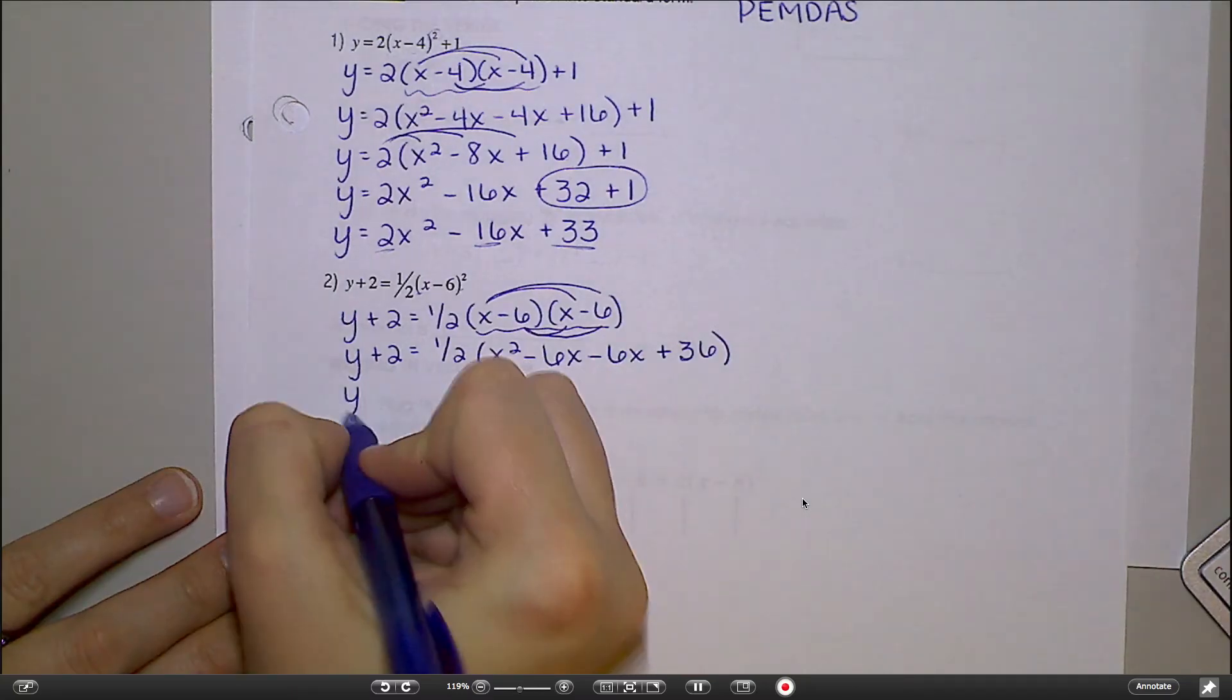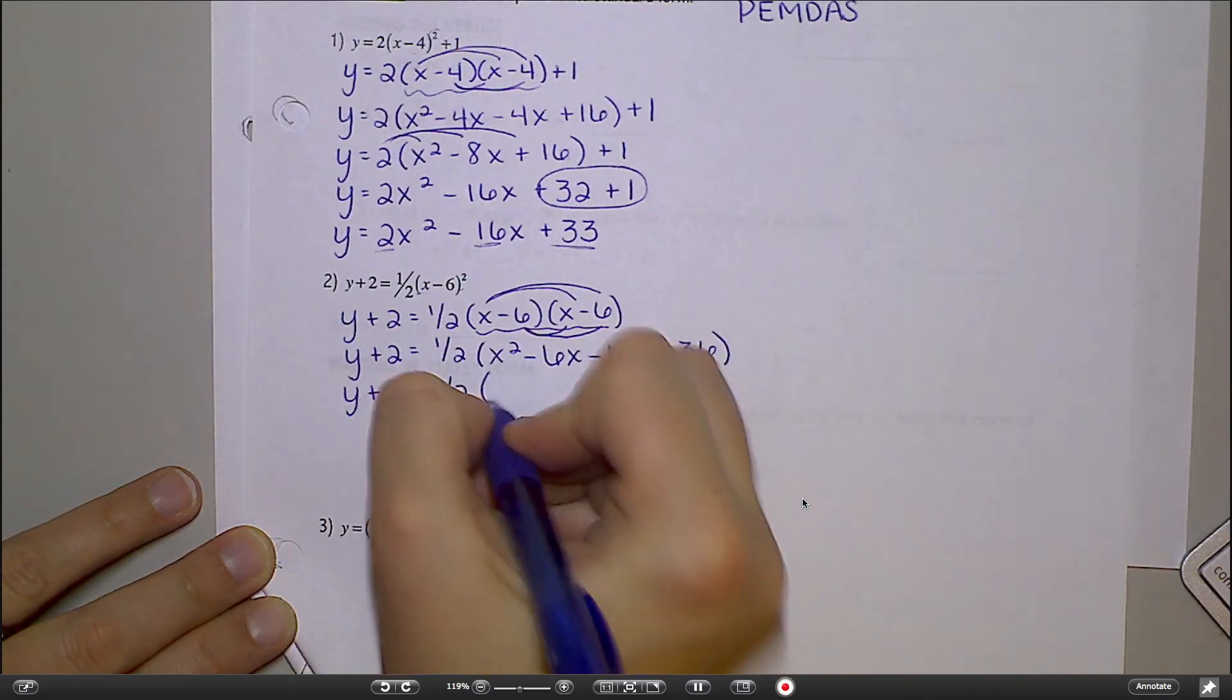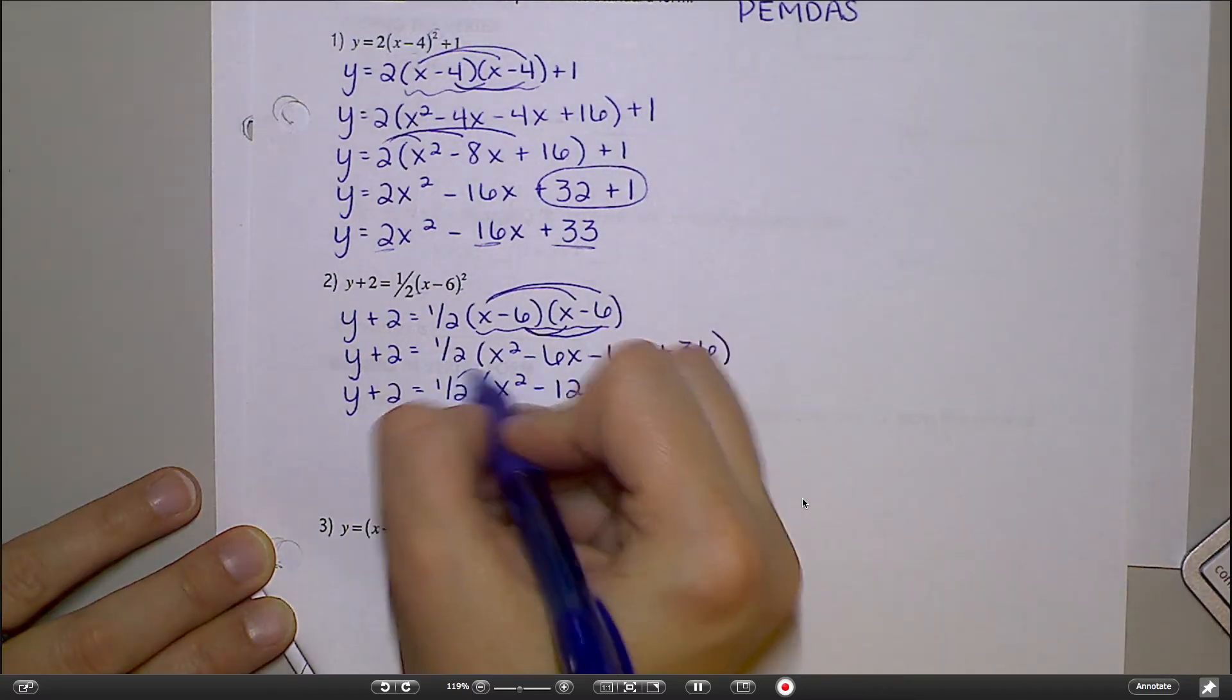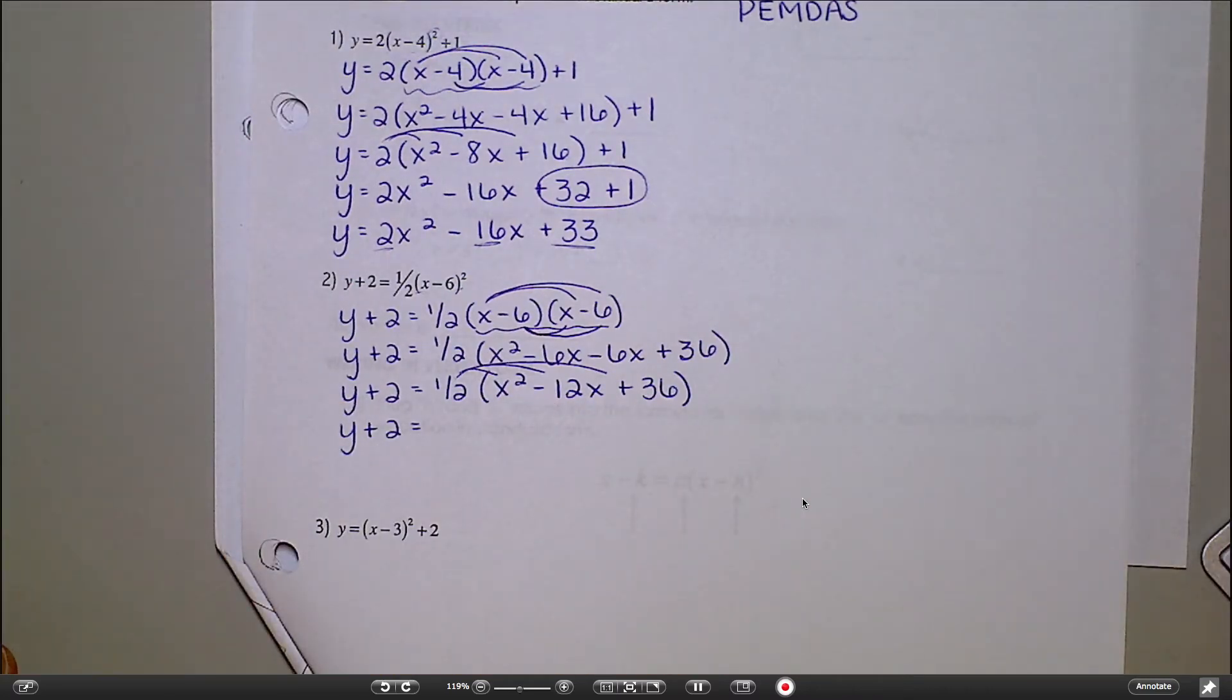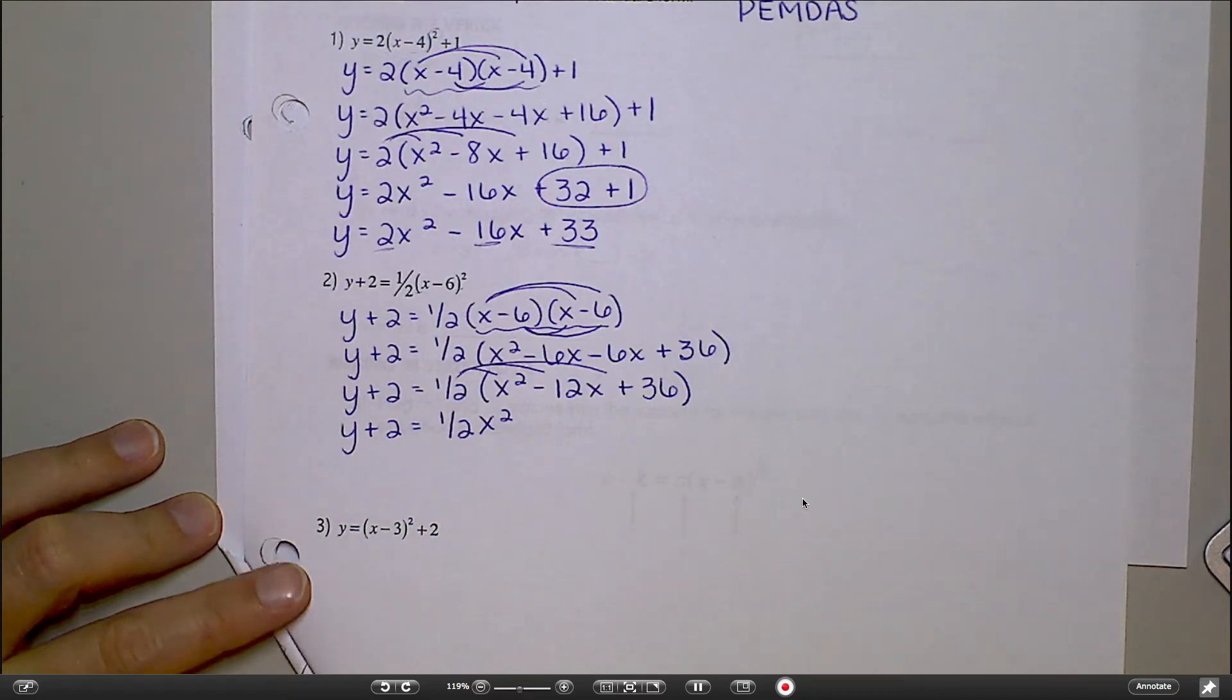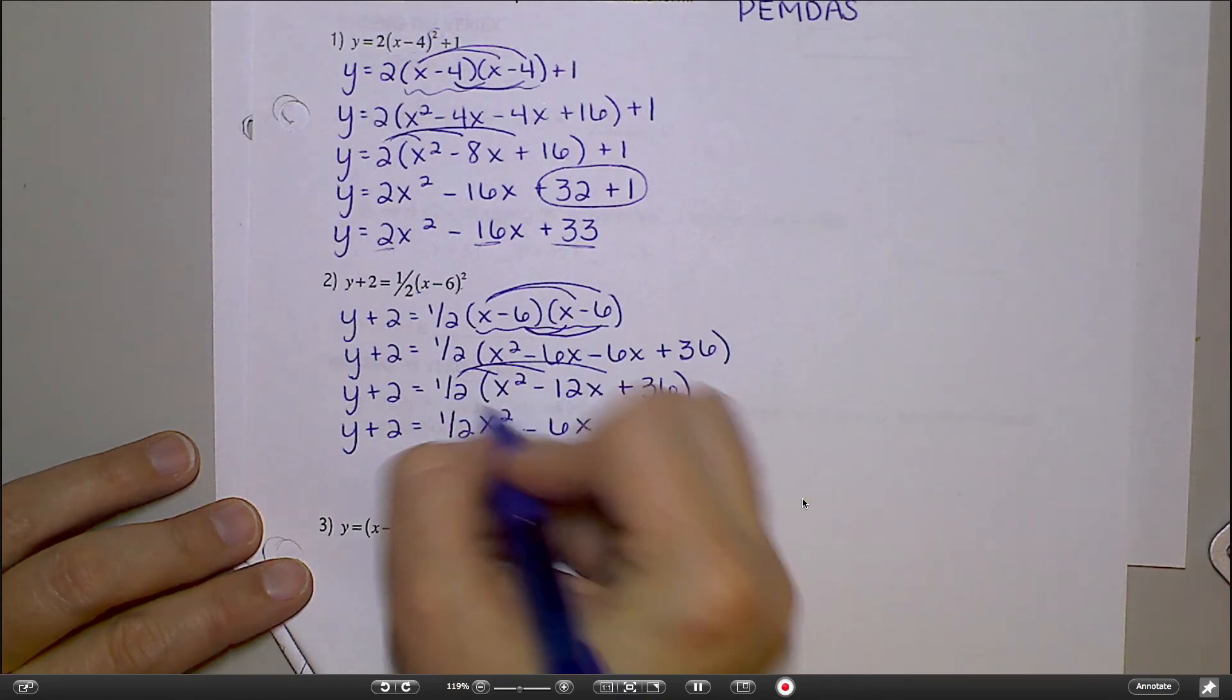Okay. So now y plus 2 equals 1 half. Let's combine my 6x's. Distribute the 1 half. What's 1 half times x squared? Oh, 1 half squared. 1 half x squared, yeah. I have a lot of people who want to say 1 half times x squared would just be x. That's not 2x. That's x squared. So just like 3 times x squared would be 3x squared, 1 half times x squared is 1 half x squared. 1 half times negative 12 is negative 6x. And 1 half times 36 is 18.